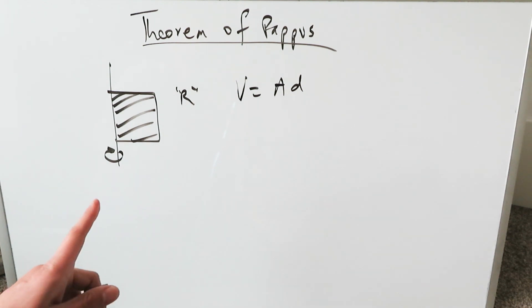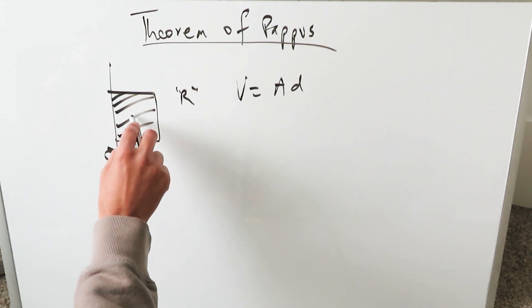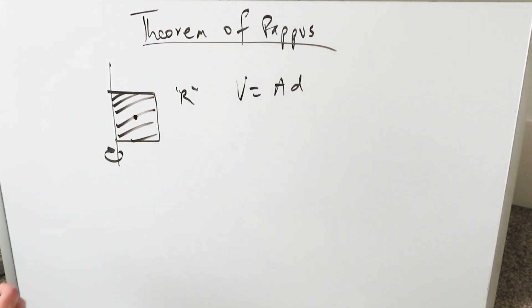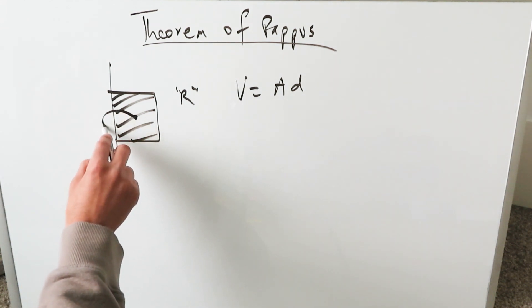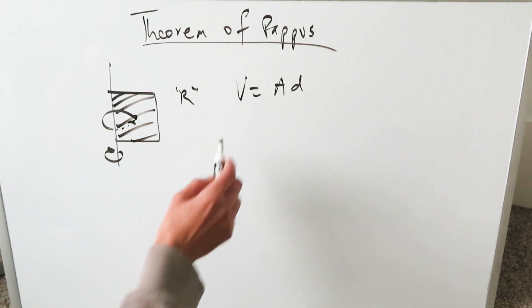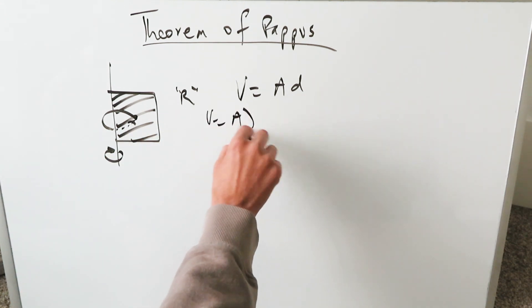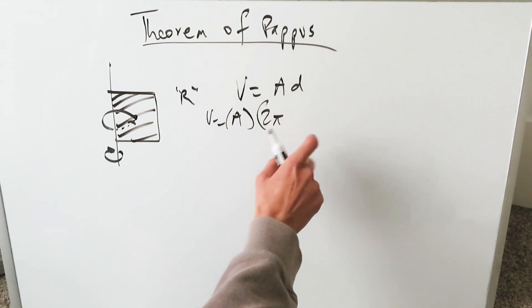The area is obviously equal to the area of this shaded region, an area between curves. The distance would be equal to the center of mass or centroid of this region. That centroid undergoing a single rotation would be your distance. Volume here would be equal to the area of your shaded region times 2π, a certain value from your centroid.